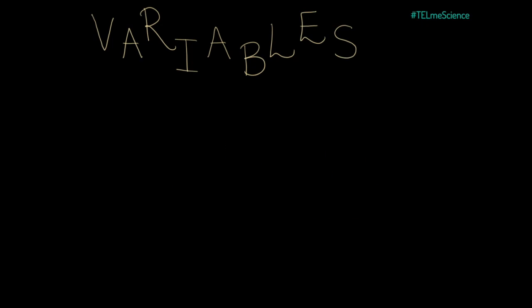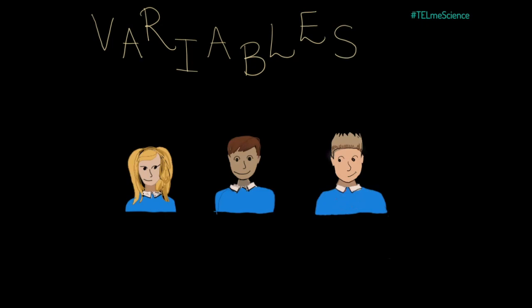Everything can be variable. In the two minutes it takes you to listen to this video, your body temperature will, for example, have fluctuated by a fraction of a degree. So what types of variables are there in an investigation? Well, let's invent an investigation just for context. Let's say that we want to know how fatigue affects reaction time.